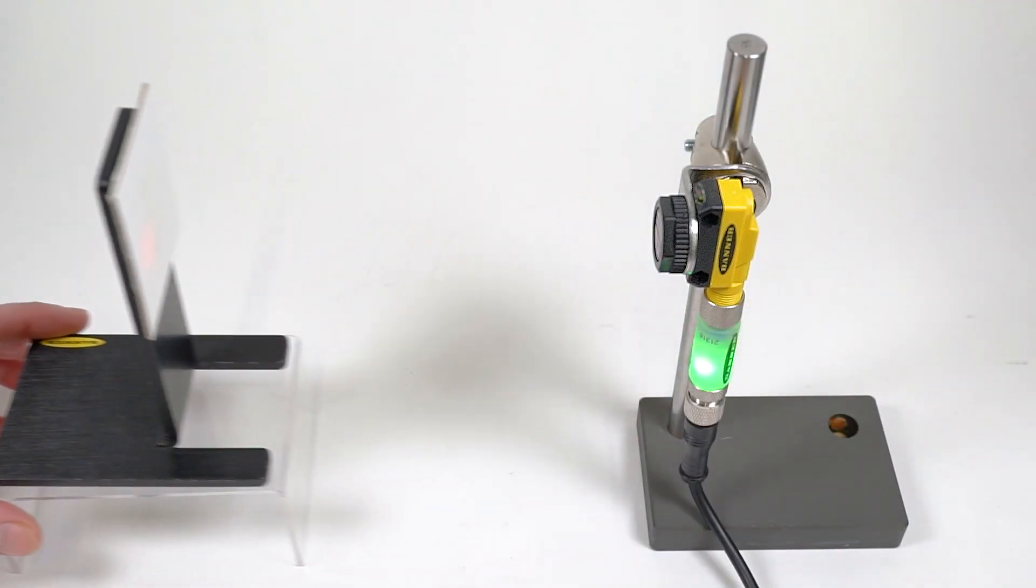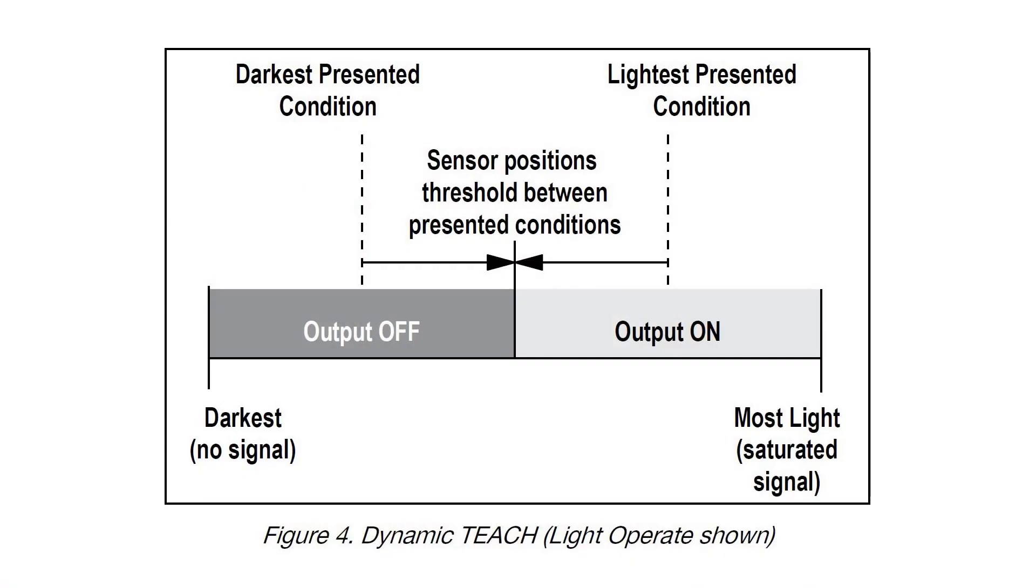The Dynamic Teach Mode takes multiple returned light measurements and automatically sets an optimal switching threshold based on the lightest and darkest conditions of the application.